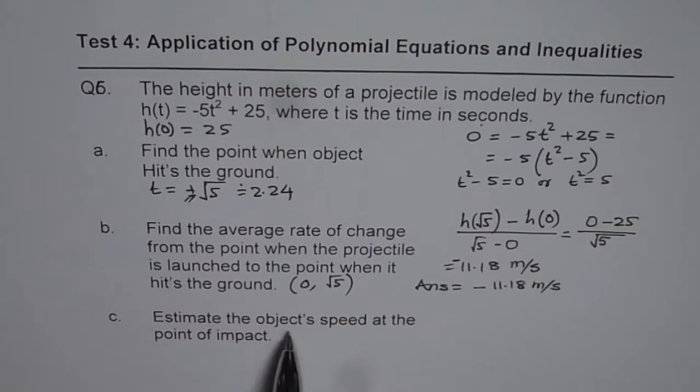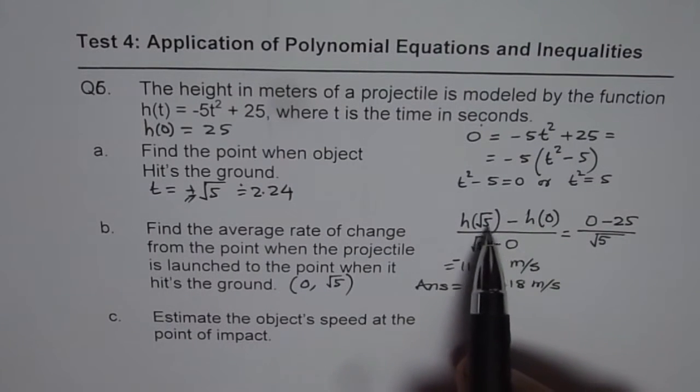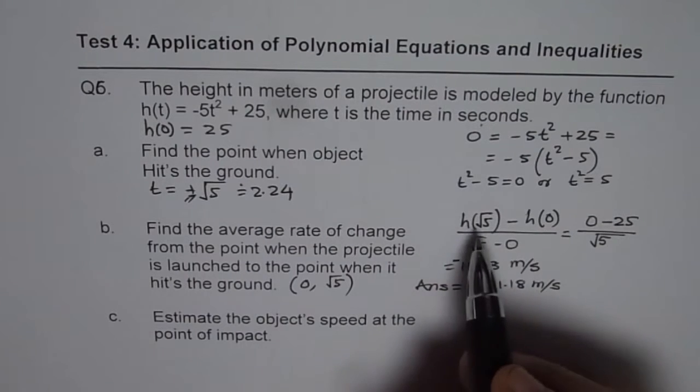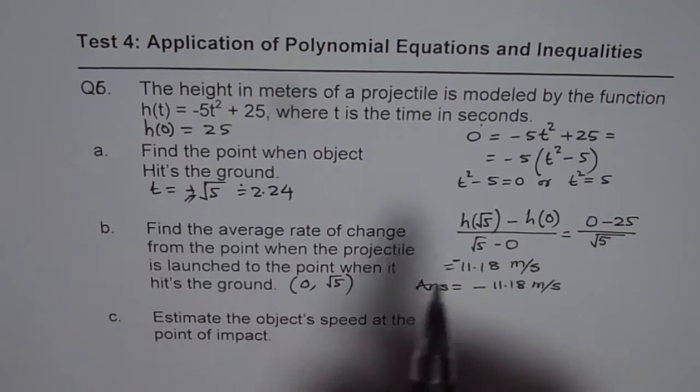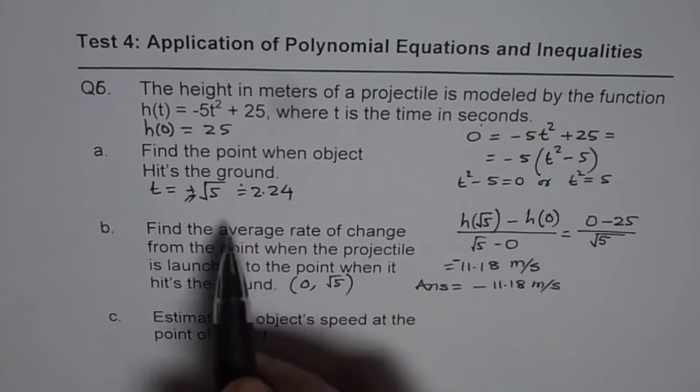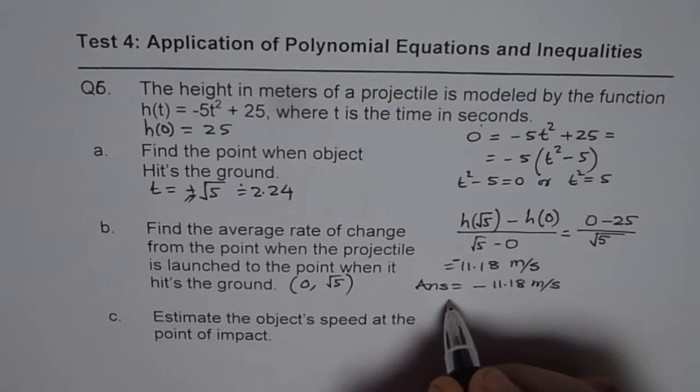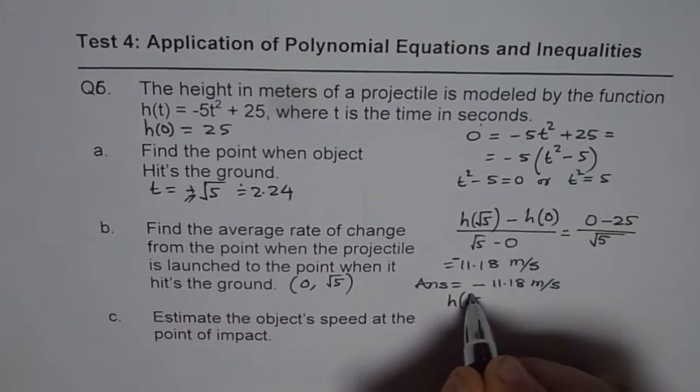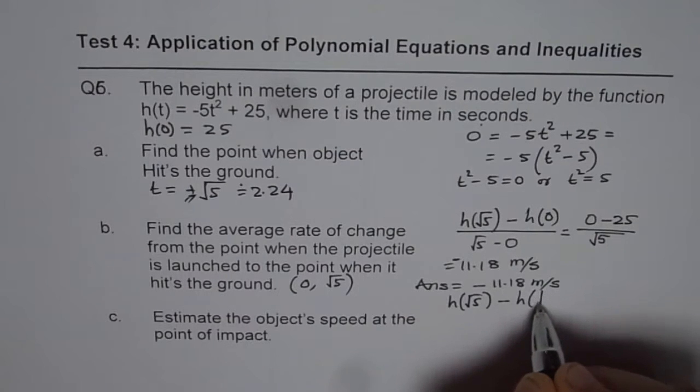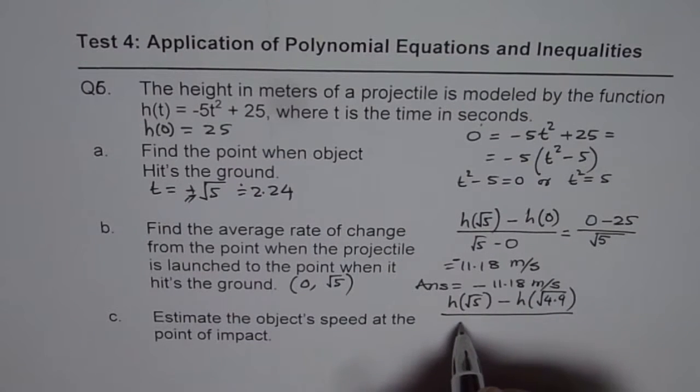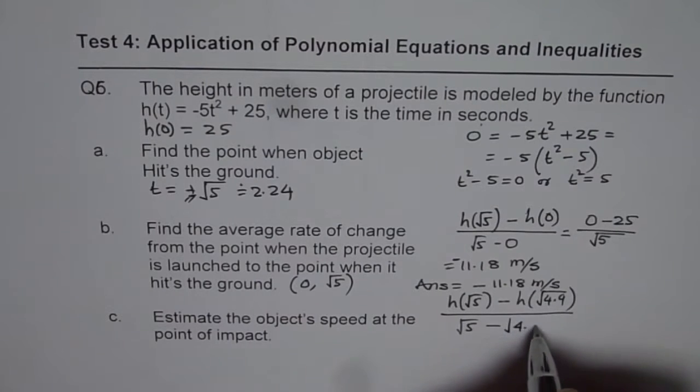Now part c is estimate the object's speed at the point of impact. Now, when we are talking about the speed at impact, then we are talking about difference quotient with very small interval of time. So in that case, what we should do is, we should find the value of this function at a point which is very close to √5 and it is less than √5. So what we will do is, we will find [h(√5) - h(√4.9)] / (√5 - √4.9).